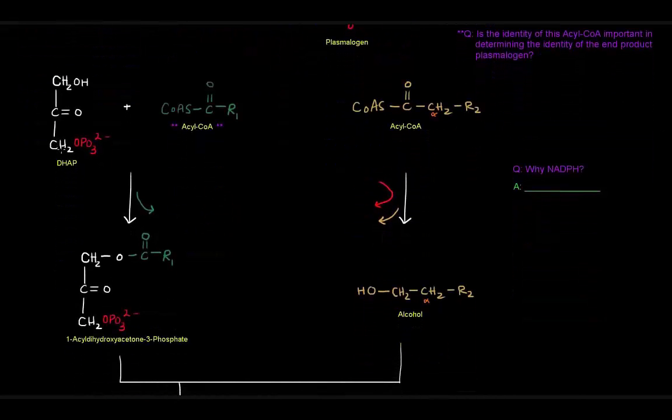The first thing that happens is we're going to have dihydroxyacetone phosphate, which is basically going to be the glycerol backbone. We're going to take that and join it to an acyl-CoA. This acyl-CoA has these little asterisks next to it because they're associated with this question up here. Is the identity of this acyl-CoA important in determining the identity of the end product plasmalogen? That's something that we can't know right now. We have to go through, look at the pathway, and once we're done, come back and see whether or not this particular acyl-CoA was important or not.